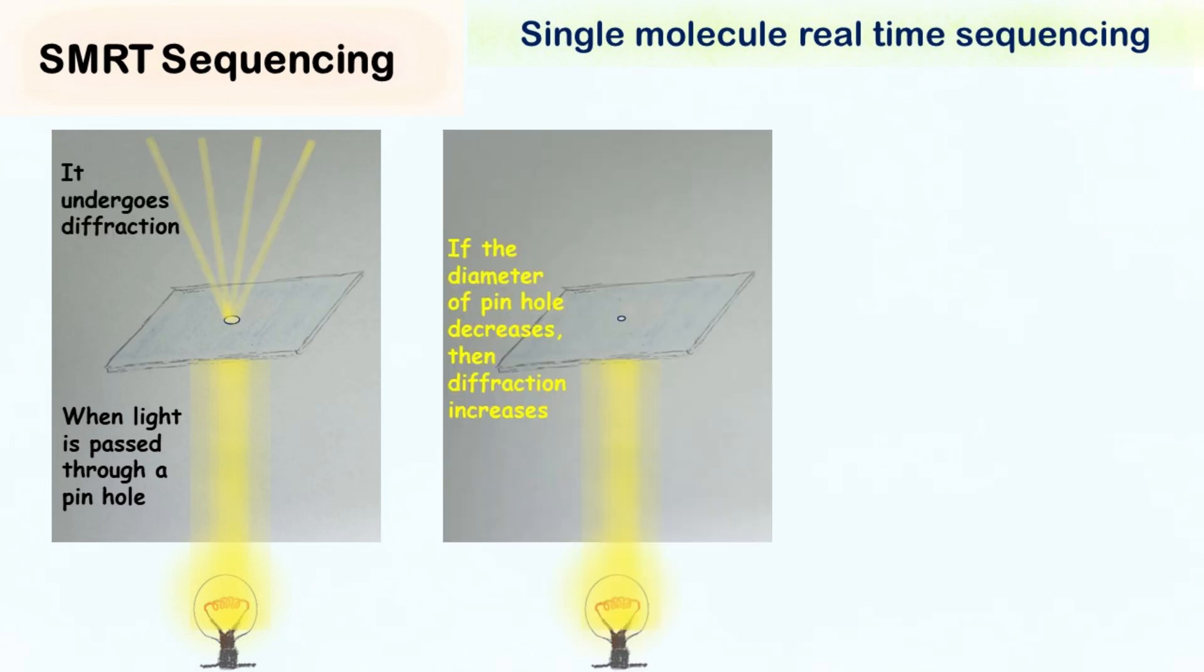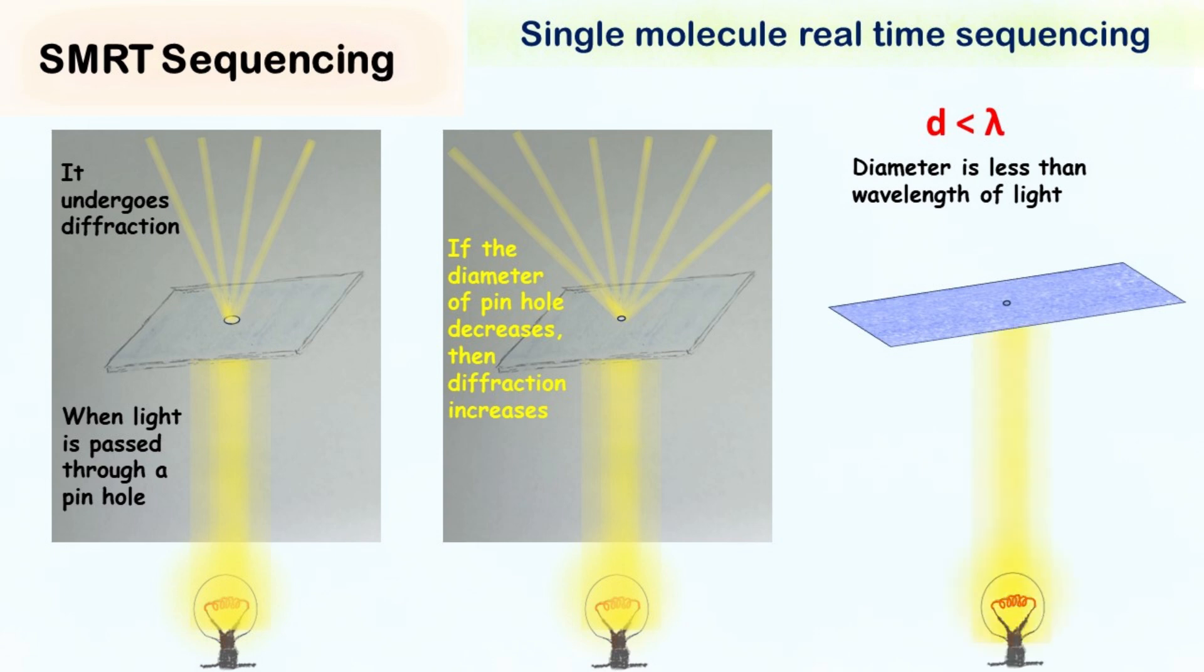The diffraction increases as the diameter of pinhole decreases. Something interesting happens when the diameter of pinhole is less than the wavelength of light. In this case, the light simply cannot pass through the pinhole.